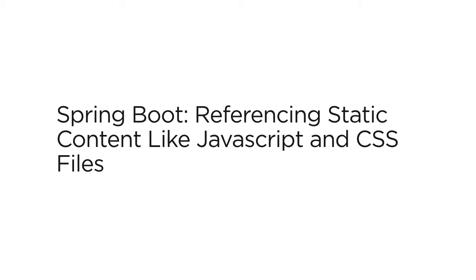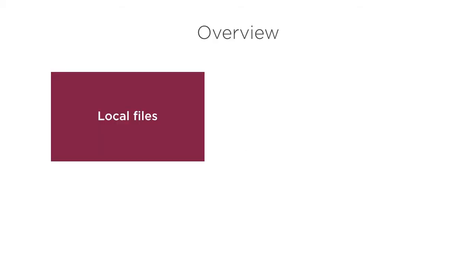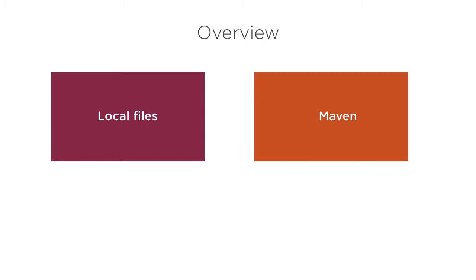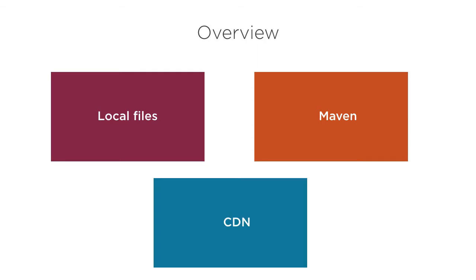In this video we will demonstrate how to reference static content like JavaScript and CSS files in Spring Boot. We will see three ways of referencing: by including the files locally in our projects, by including them in the Maven POM file as WebJars, and finally by referring to a CDN URL.